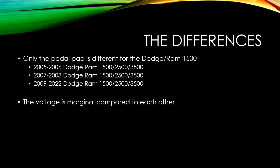So the only differences between the pedals are actually the pedal pad, the actual thing you put your foot on, and the voltage is very marginal. So these are for Dodge Ram 1500, 2500, 3500 and these are for hemi pedals. While the others are 07 to 8 for the other style, and the 09 to 22 Ram 1500, 2500 and 3500.